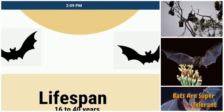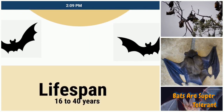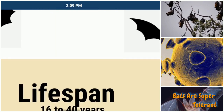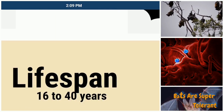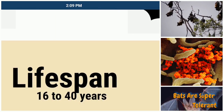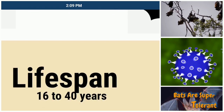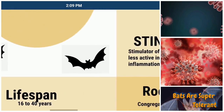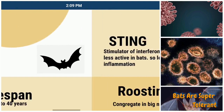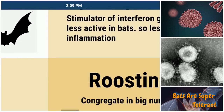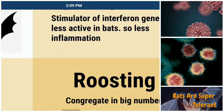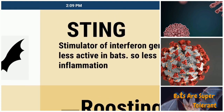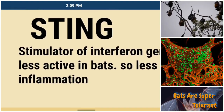These things are the properties which make them survive in different situations. Despite having so many viruses, their lifespan is about 16 to 40 years, though they are very small in size. Their lifespan is very high, so viruses cannot eradicate this species. The roosting and congregating in big numbers means they exchange different kinds of virus strains.